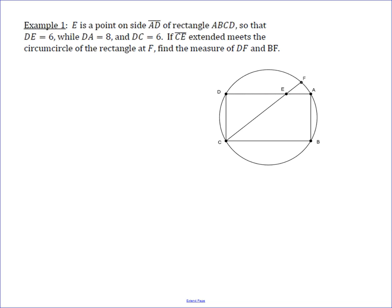In this problem, we have a cyclic quadrilateral, which happens to be a rectangle, and we have a few measurements given. We know that DE is 6 and DC is 6. Since this is the right angle, since it's a rectangle,